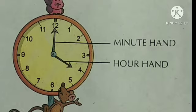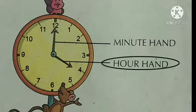There are two hands in a clock, one long and one short. The long hand is the minute hand. The short hand is the hour hand.